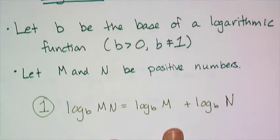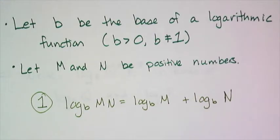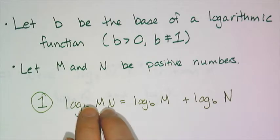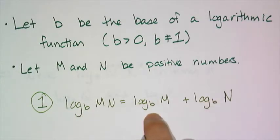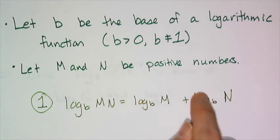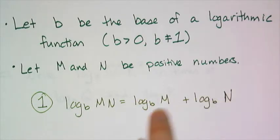So the first log law is this one here, and it says the log base b of a product m times n is the same thing as log base b of m plus log base b of n. And this rule is the product property of exponents. Remember when you multiplied the two bases you had to add the exponents? And these log base b of m and log base b of n are actually the exponents. Remember the logarithmic function spits out the exponent.